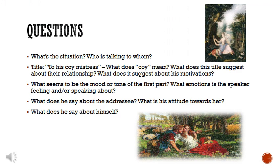We can start with the basic questions: what is the situation, what's going on? Who is talking to whom? What is this person saying and why are they saying it? And who is hearing it and how might they be reacting to what they're hearing? In this poem, the title tells us quite a bit — 'to his coy mistress.'